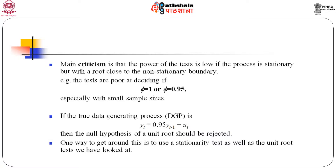Now, the main criticism is that the power of the test is low if the process is stationary but with a root close to the non-stationarity boundary. For example, the tests are poor at deciding if phi equals 1 or phi equals 0.95, especially with small sample size. If the true data generating process is y_t = 0.95 * y_{t-1} + u_t, then the null hypothesis of a unit root should be rejected.